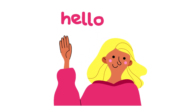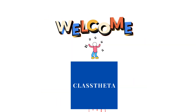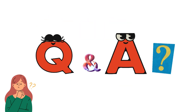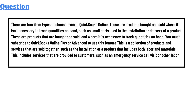Hello everyone, my name is Mr. Smart and I am your teacher. I will be teaching different questions and answers in this question and answer series. For today's question, which we will be discussing: there are four item types to choose from in QuickBooks Online.